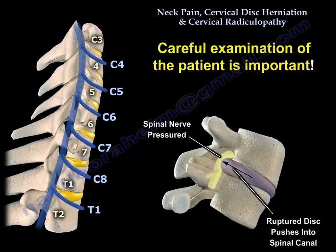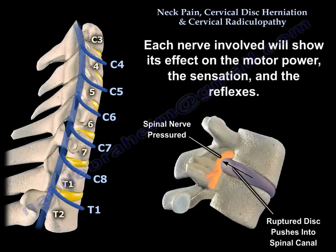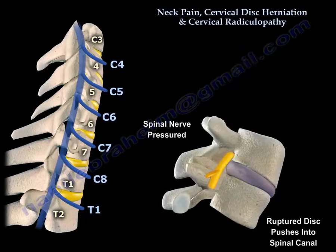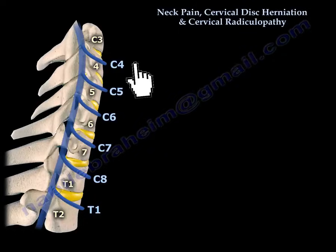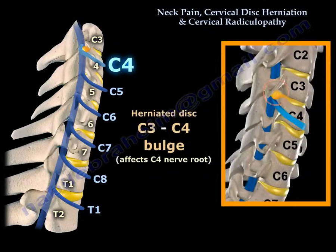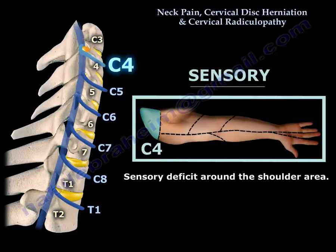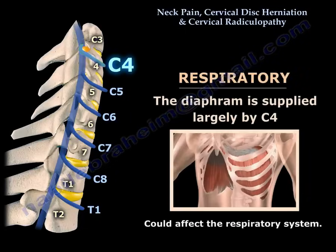Careful examination of the patient is important. Each nerve involved will show its effect on motor power, sensation, and reflexes. So if you have a C3-C4 bulge, that will affect the C4 nerve root. That will give you some sensory deficit around the shoulder area, as seen in the diagram. The diaphragm is supplied largely by C4, so it could affect the respiratory system.